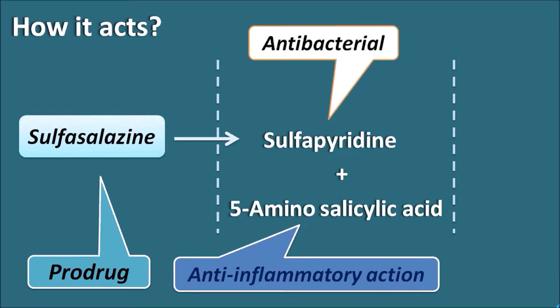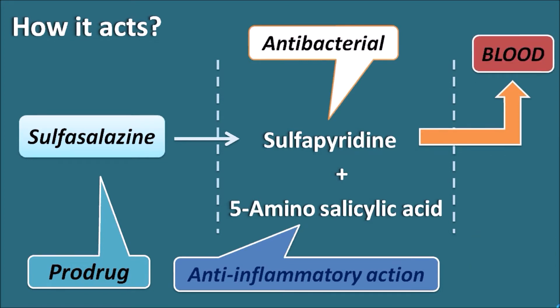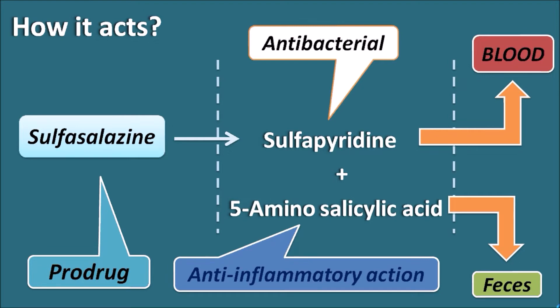Sulfapyridine released into the colon can also be absorbed to some extent into the systemic circulation. On the other hand, 5-aminosalicylic acid, because of its polarity, cannot be absorbed further and is mainly excreted in the feces. In this way, sulfasalazine is split into two components: sulfapyridine plus 5-aminosalicylic acid.